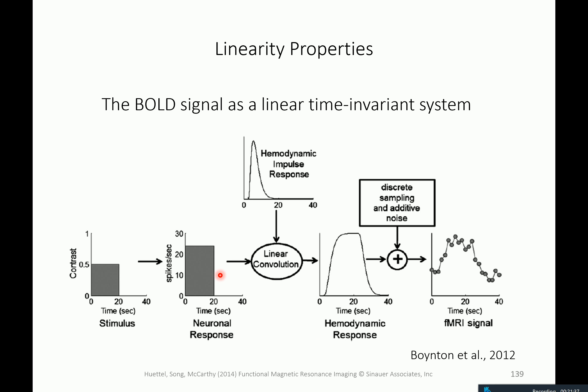This is what you find in papers: on the first level they do a GLM, get the betas, and use them for a classifier or representational similarity analysis. They should say 'we convolved the stimulus onset function with the canonical hemodynamic response function' — and indeed if you read an fMRI paper that's the sentence you'll find. Has anyone read a sentence like that? 'We convolved the stimulus onset function' — who has read that in an fMRI paper?